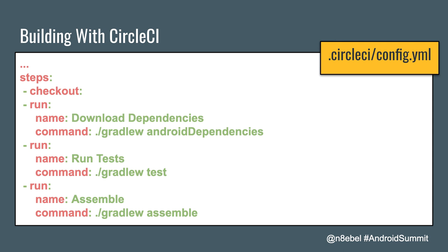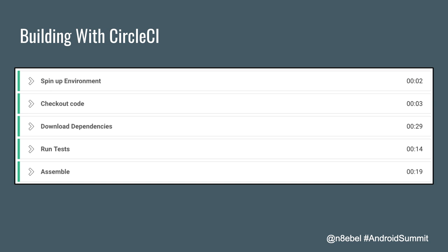This is a sample CircleCI config file that lives within your project under the directory `.circleci/config.yml`. Using YAML syntax, after defining the build environment at the top, you define the steps of the build process. The first step is to check out the code, then define a run task called 'download dependencies' to check for all Android dependencies, then run your tests, and finally assemble your code.